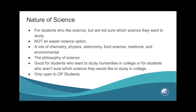Nature of Science — just to make clear — is not an easier science option. It's a science for students who like science but don't know which science they like. It is a mix of chemistry, physics, astronomy, food science, medicine, and environmental science. It's really good for students who aren't sure what science they want to study, or if they want to study humanities in college. Please note this course is only open to DP students.